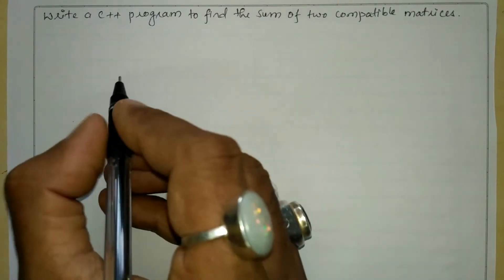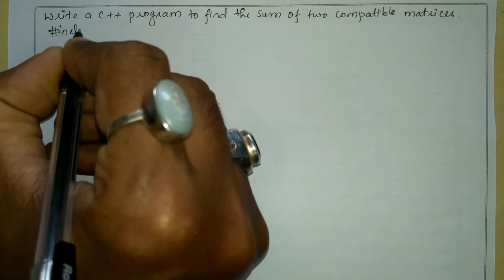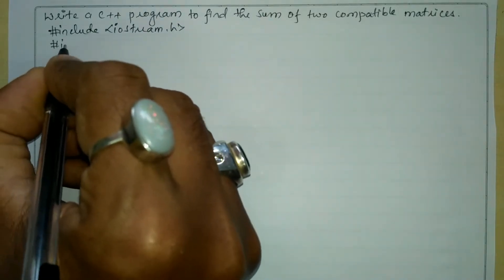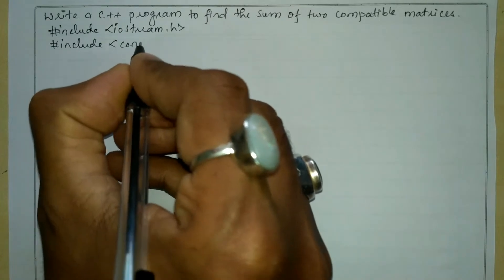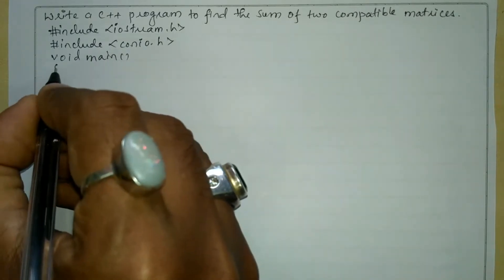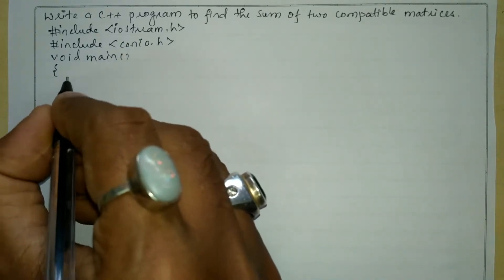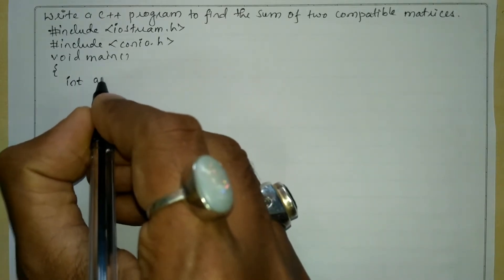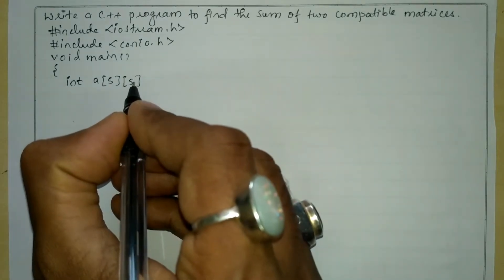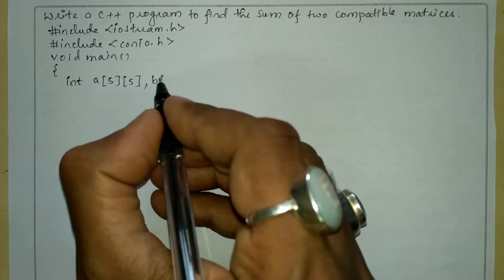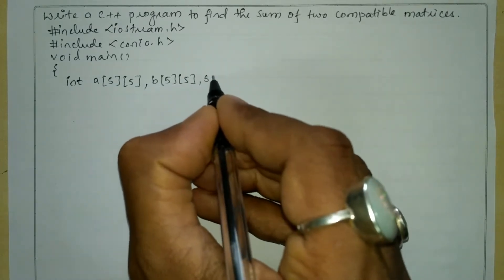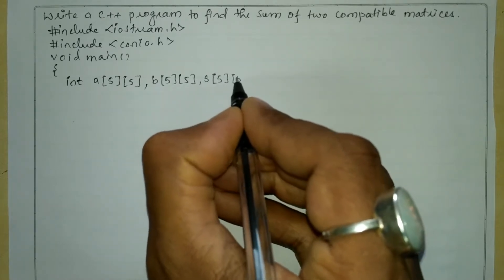Now let us start writing the preprocessor directives. I will write hash include iostream.h header file, hash include console input output dot h header file. Let us write the main function with curly open brace. In the declaration section I am going to declare array of type integer: A of size 5 and 5, where the first subscript represents row and the second subscript represents column. Similarly, I am going to declare one more matrix B of size 5 and 5, and one more matrix S for the sum of size 5 and 5.